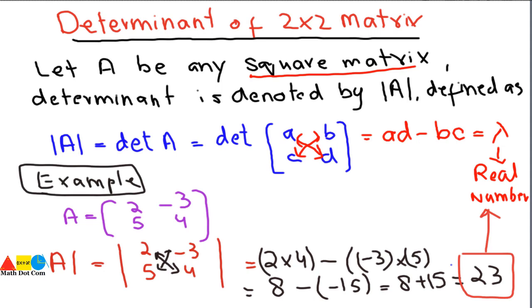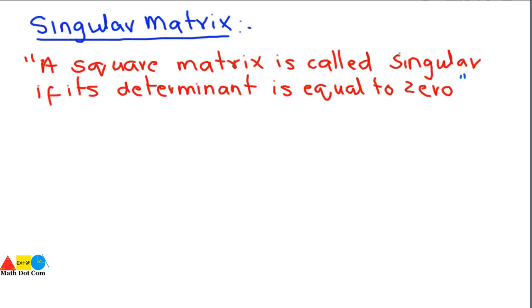This determinant is very important — we can easily identify singular and non-singular matrices, which is needed for finding the inverse of a matrix. A singular matrix is defined as: a square matrix is called a singular matrix if its determinant is equal to 0. That means if we find the determinant of matrix A and we get 0, it is called a singular matrix.